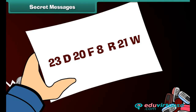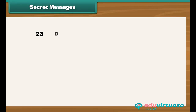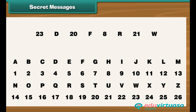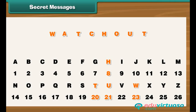Let us decode a secret message. Here is the message: 23 D 20 F 8 R 21 W. The numbers represent the letters of the English alphabet at those positions. The 23rd letter is W, the 20th is T, the 8th is H, and the 21st is U. The letters in the secret message are 3 places ahead of the actual letters: D is actually A, F is C, R is O, and W is T. So the decoded message is: Watch out!